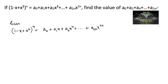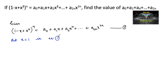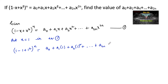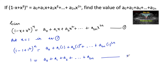To find a₀ + a₂ + a₄ + ... + a₂ₙ, let us substitute x = 1 in Equation 1. So we get (1 - 1 + 1)ⁿ = a₀ + a₁ + a₂ + ... + a₂ₙ, which gives 1 = a₀ + a₁ + a₂ + ... + a₂ₙ. Let us consider this to be Equation 2.